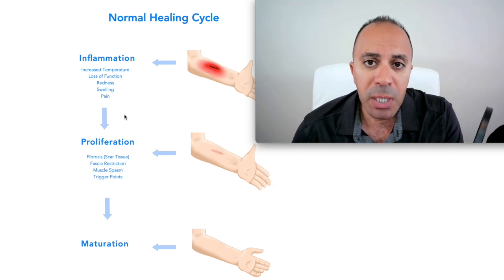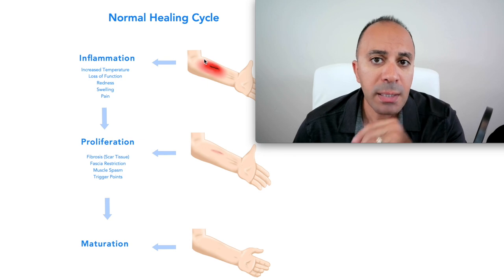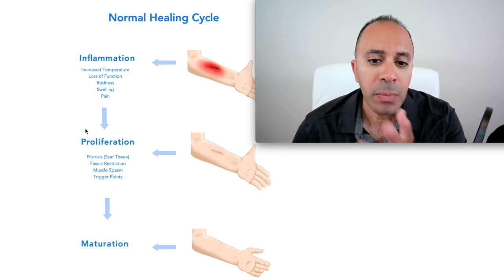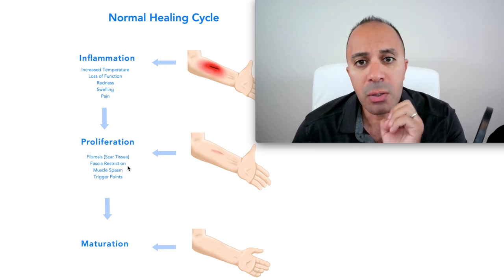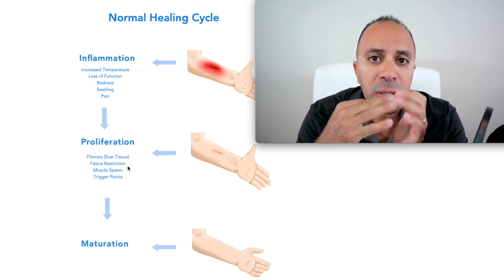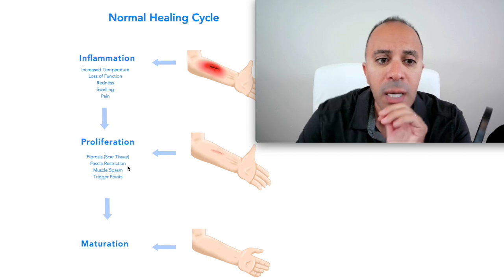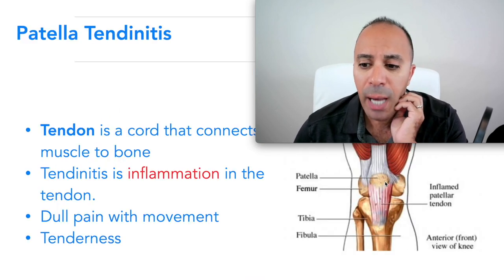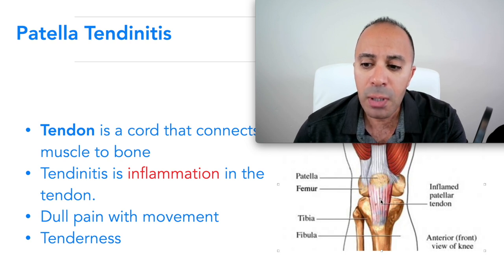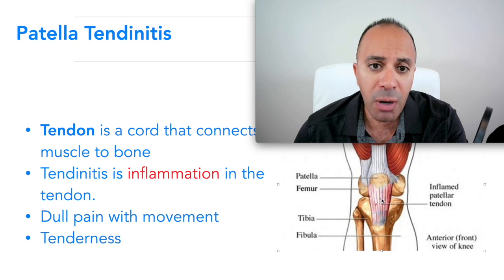The first stage is inflammation — you can see swelling, redness, and blood rushing to the area. The second stage is the proliferation stage, where your body starts to build scar tissue, fascia restriction, muscle spasm, and trigger points. In the picture you can actually see the redness and those dark spots, which are scar tissue.